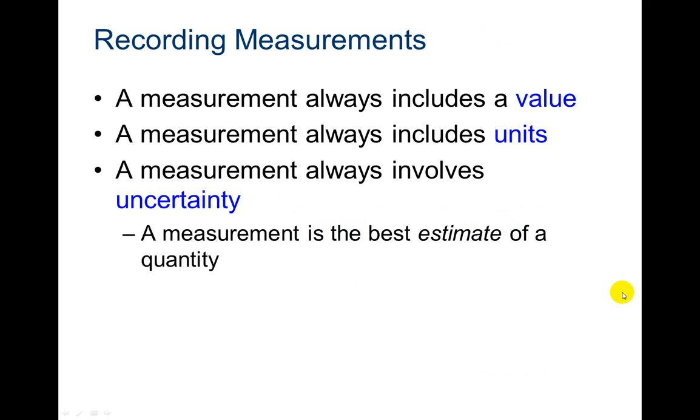When recording those measurements, always include of course a value and then you're also going to include units. And units are very important. You have to have units because if you say like 1 or you say 10, I don't know if you're talking about decameter or meter or you might even be talking about a kilometer. That's such a big difference that it has to have a unit or it is incorrect. And also that measurement always has to have an uncertainty, which we talked about before. We talked about significant digits. That last digit is always considered your error or your uncertainty, that best estimate.